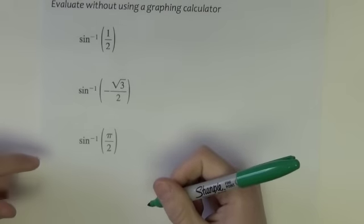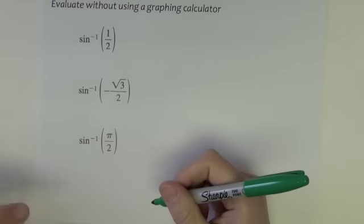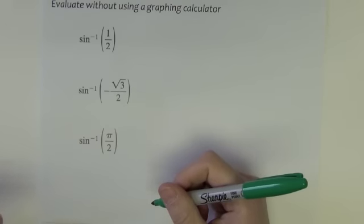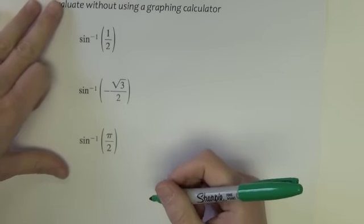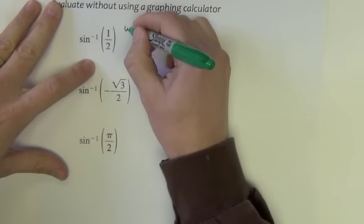You'll notice on your graphing calculator, though, above the sine, cosine, and tangent buttons are the sine inverse, cosine inverse, and tan inverse buttons. So they're there. But without using a calculator, can we do this? Okay, so first of all, what does this mean?